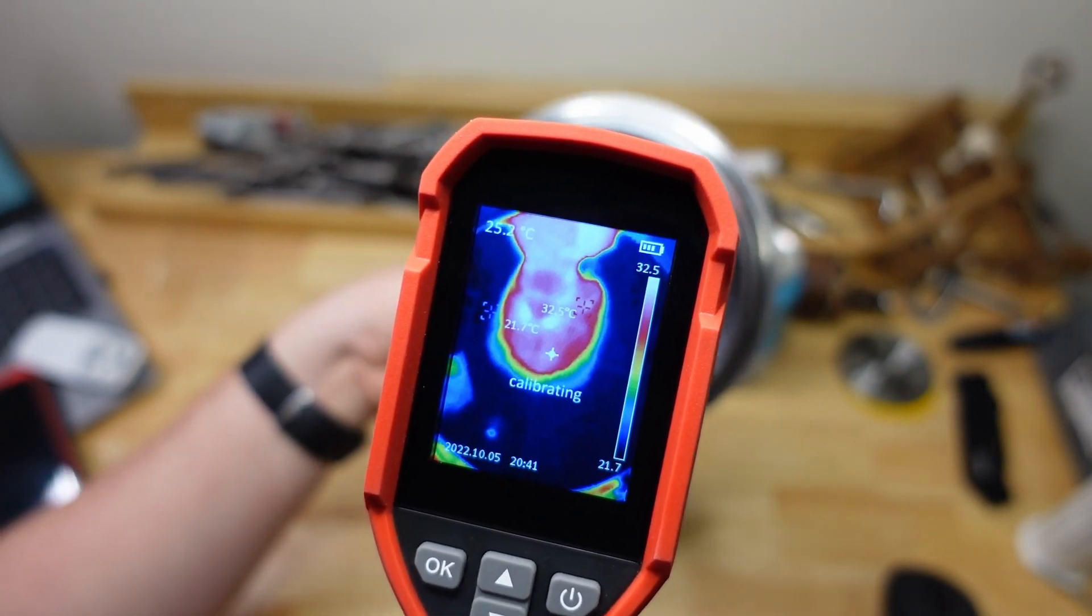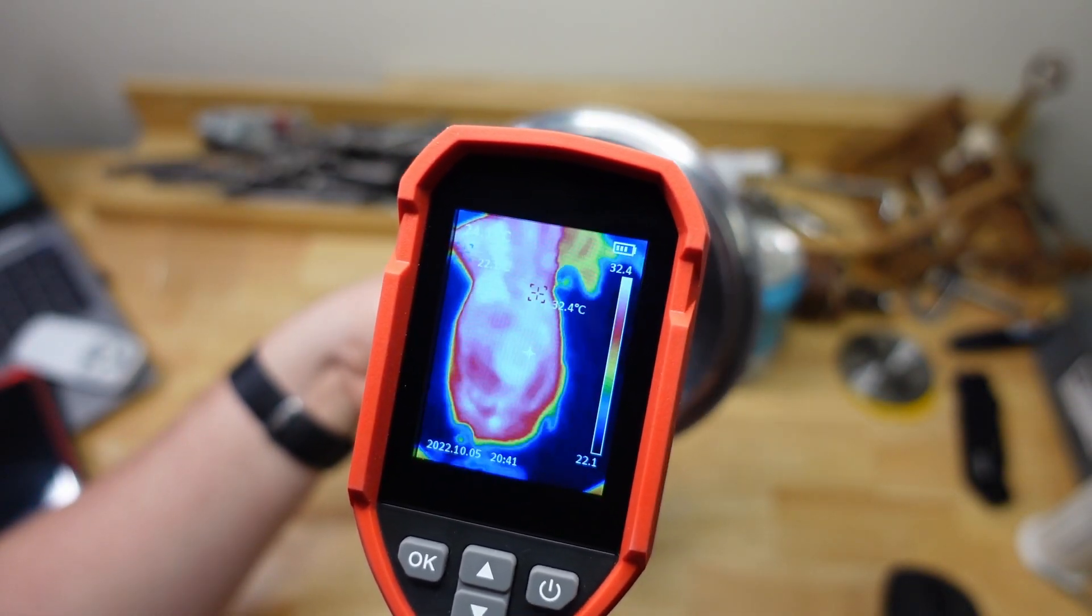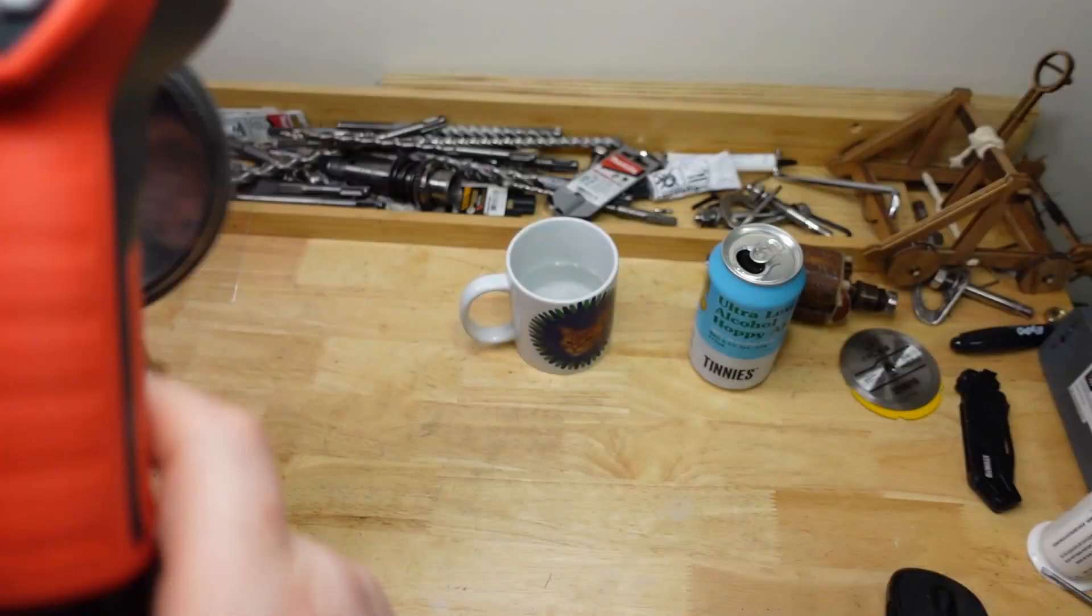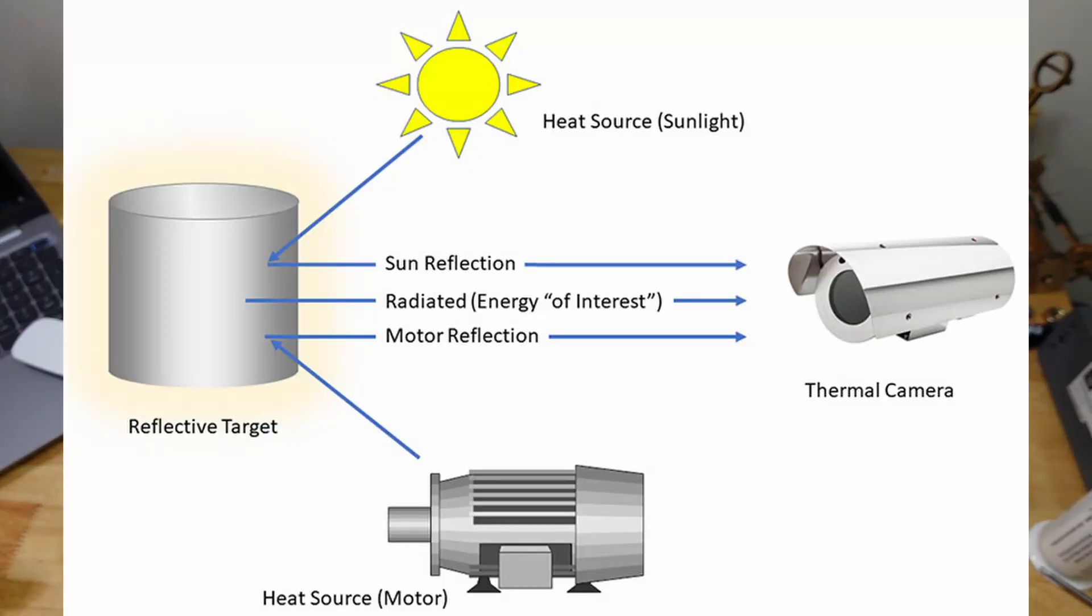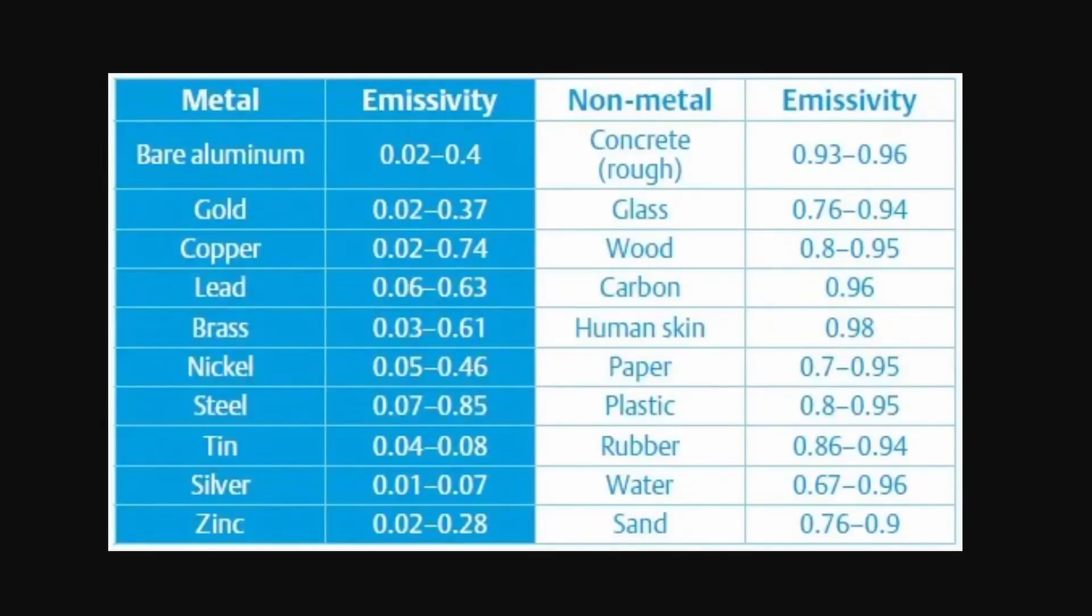And that leads me into the next important part of thermal imaging, which is emissivity. So the emissivity is a property of materials that describes how much heat they're going to be emitting versus like reflecting or absorbing. So you can look up emissivity tables, and then you can plug these numbers into your camera, depending on what you're measuring.